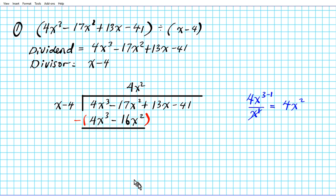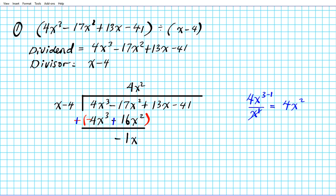Subtracting is the same as adding the opposite, so we distribute the minus sign across those two terms. The minus becomes plus, the positive 4x³ becomes negative, and the negative 16x² becomes positive. Combining downwards: the first terms cancel to zero. Then negative 17x² plus 16x² gives us negative 1x².